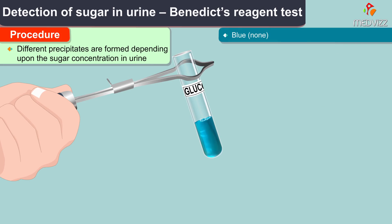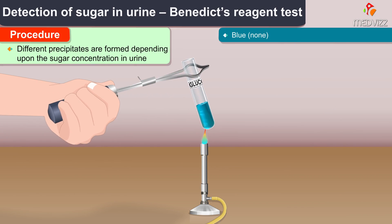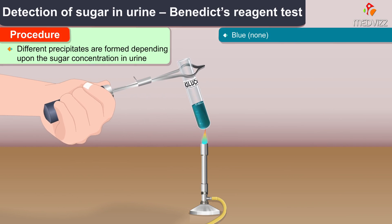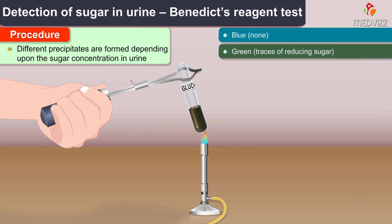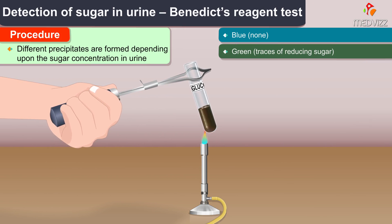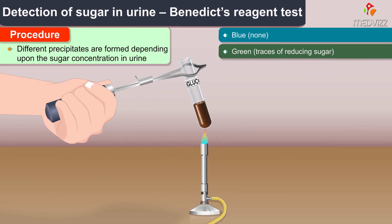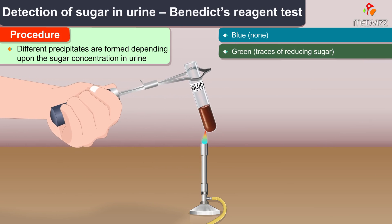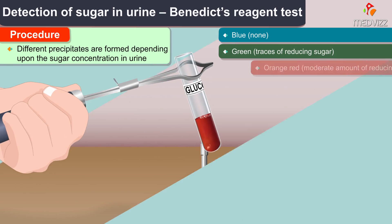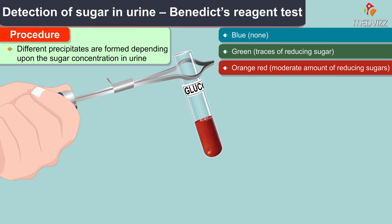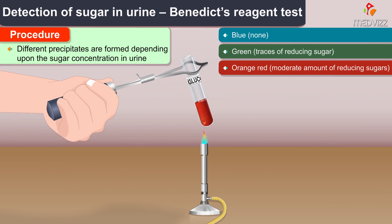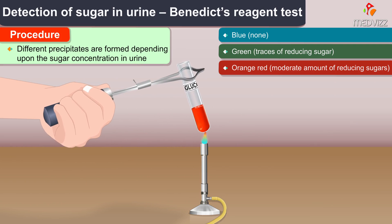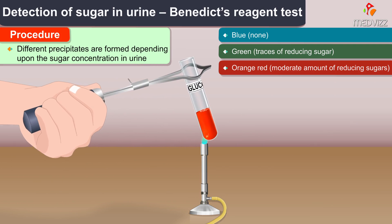The color of the precipitate can be blue or green, orange, red, or brick red.